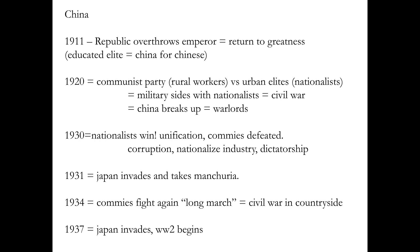The U.S. government guarantees the money in the banks, and after 2007–2008 it guarantees the banks themselves. But the idea is capitalism dies — we'll talk about that when we get to the Great Depression. So if you're the Nationalist and capitalism dies, that's a problem. What they end up doing is corrupt: they nationalize industries so the military dictatorship government owns the industries — not exactly what they were promising in the 1920s.